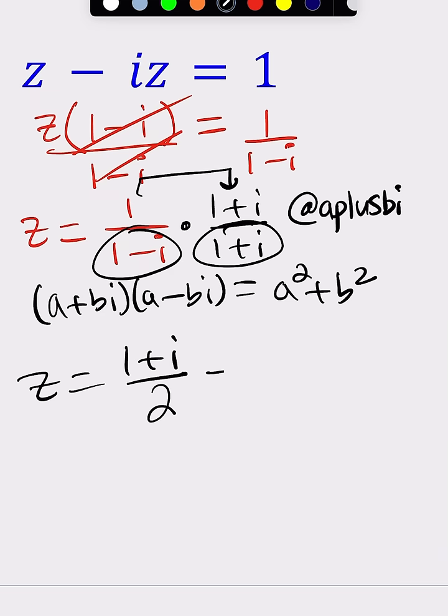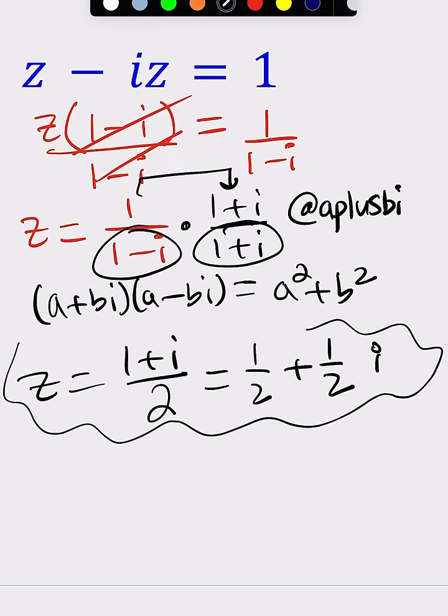But we can also write it as 1 half plus 1 half multiplied by i, and that would probably be the most standard form of writing it. And that's it for today. Bye!